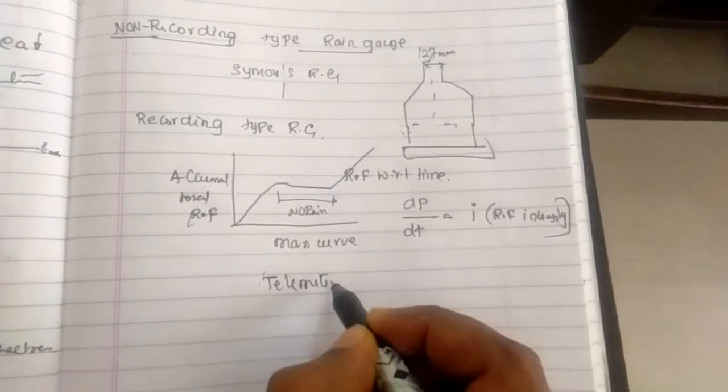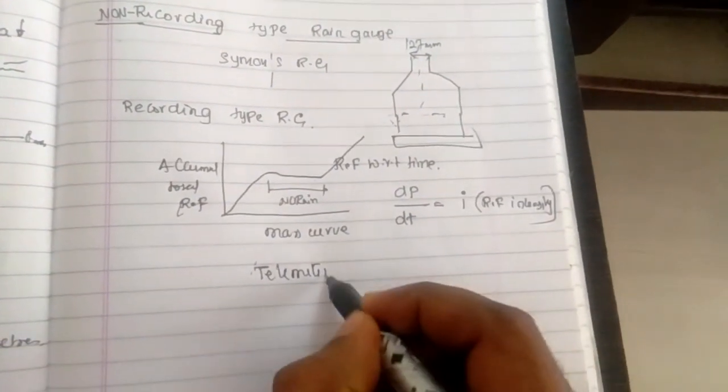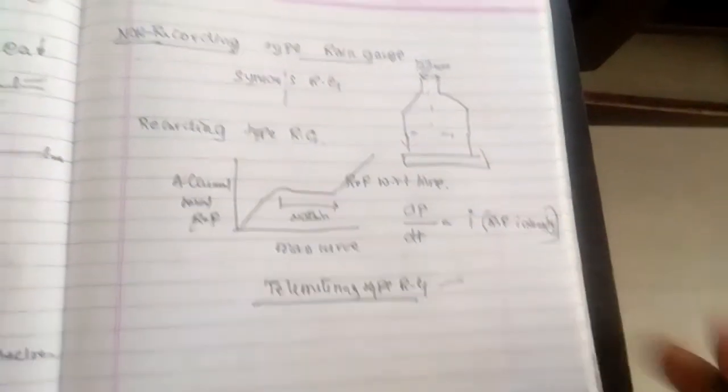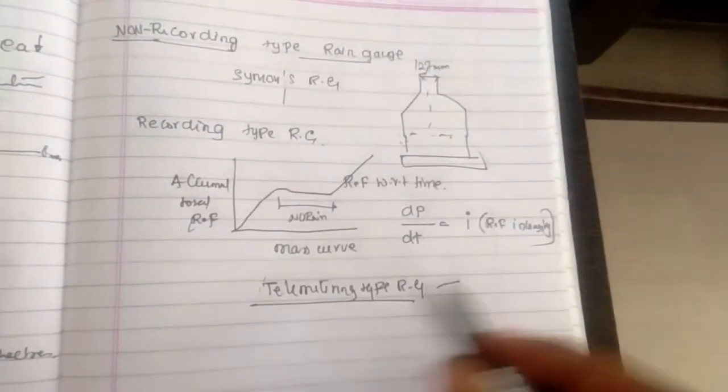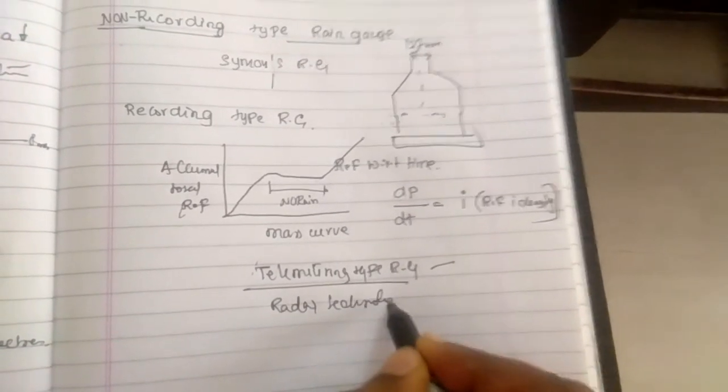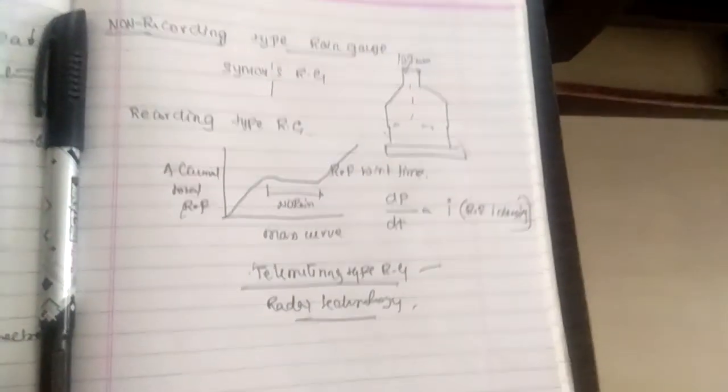Radar technology rain gauges are also new technology being used for rain gauge stations to measure rainfall in different locations.